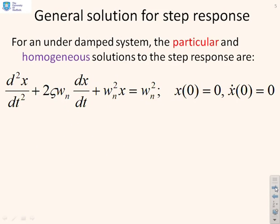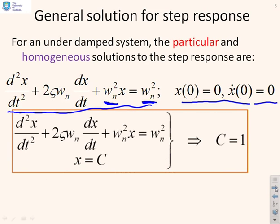Looking at the general solution for this second-order differential equation with zero initial conditions — for convenience, we've set the right-hand side to be the same as the coefficient of x so that the steady state is 1. This just makes the algebra a little bit easier. In steady state, solving that part gives x = 1. We're assuming that the signals x(t) are convergent.